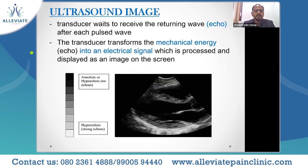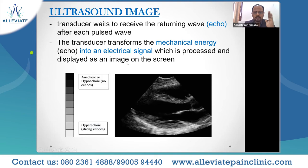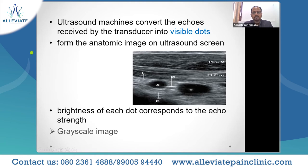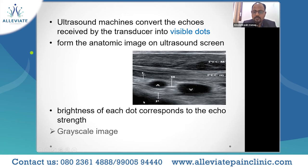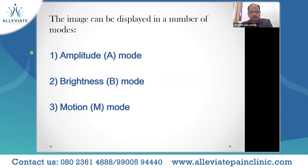The transducer waits to receive the returning wave — the echo — after each pulsed wave. The transducer then transforms this mechanical energy into an electrical signal which is processed and displayed as an image on the screen. Based on that echogenicity, we have terminologies: anechoic, hypoechoic, and hyperechoic. The ultrasound machine converts echoes into visible dots which form the anatomical image — each particular structure is a dot, and those dots combined give the anatomical image. The brightness of each dot corresponds to the echo strength.